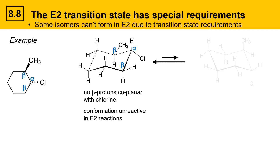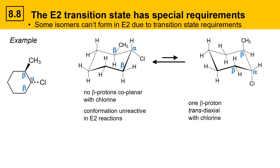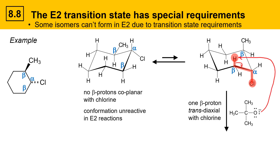If we chair flip this molecule, we get to a conformation where the alpha and beta positions are visible. Here, there's one beta proton that's trans-diaxial with chlorine — this proton is trans to chlorine and also axial, lying in the same plane, making it reactive in E2. However, looking at the other beta position, the methyl group is occupying the axial position, so there's no proton in the axial position on that beta carbon. Therefore, the molecule can't react through this beta position, and a strong base will only deprotonate the beta position that's trans-diaxial with chlorine.